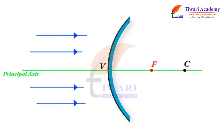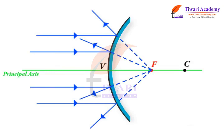When parallel light rays strike a convex mirror, they are reflected such that they appear to emanate from a single point F located behind the mirror. This point is called the virtual focus of the mirror. The focal length F of the mirror is simply the distance between V and F.